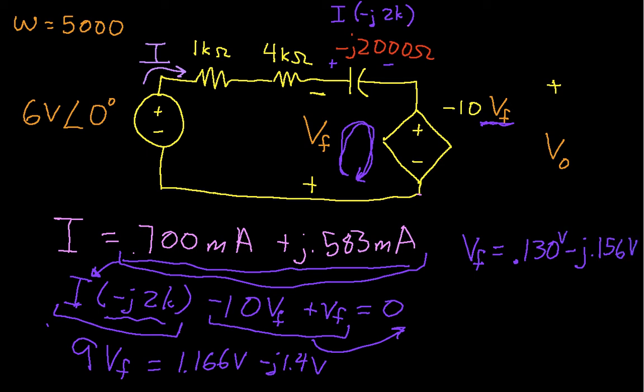We're almost there. We know that Vout is negative 10 Vf.